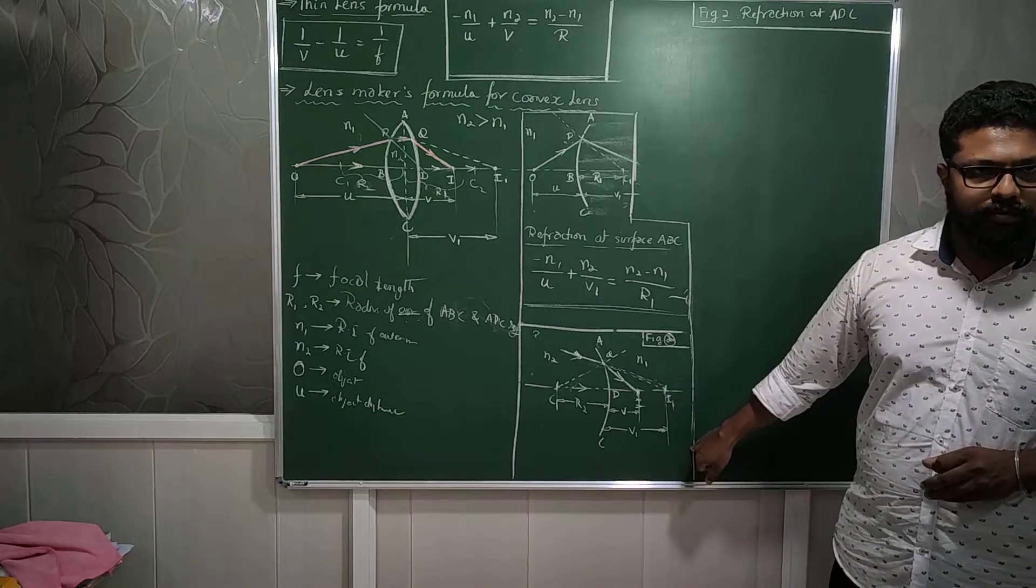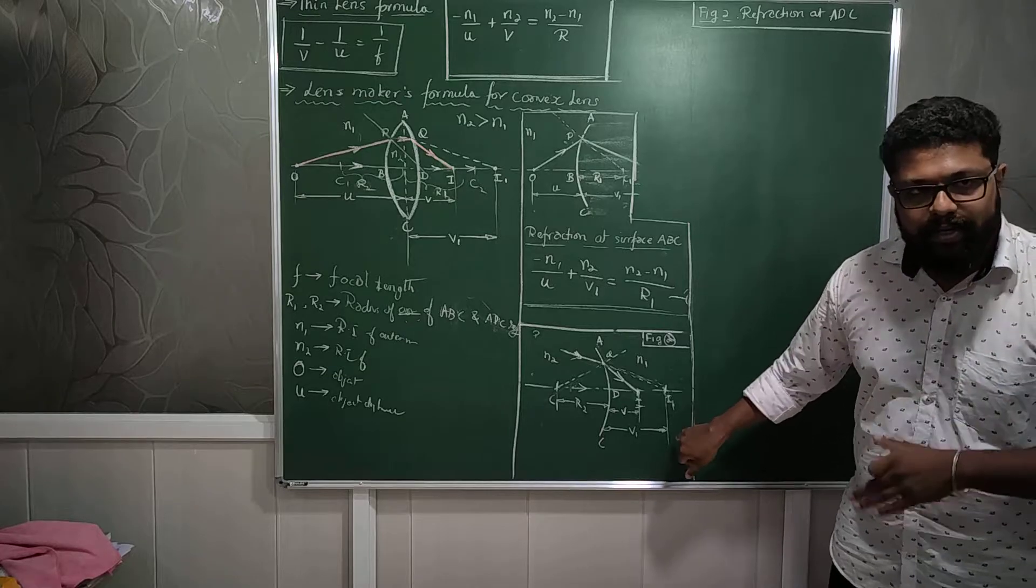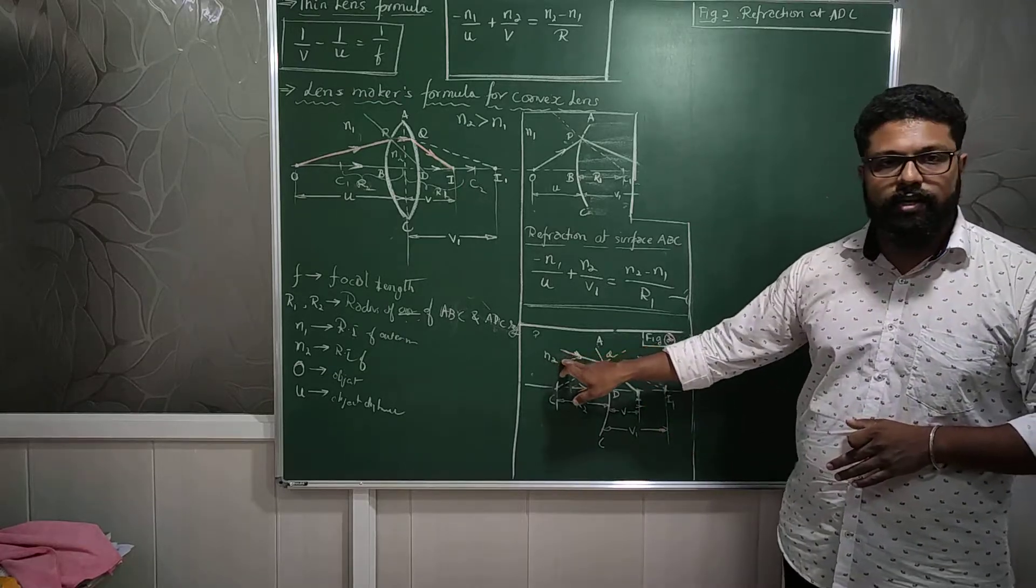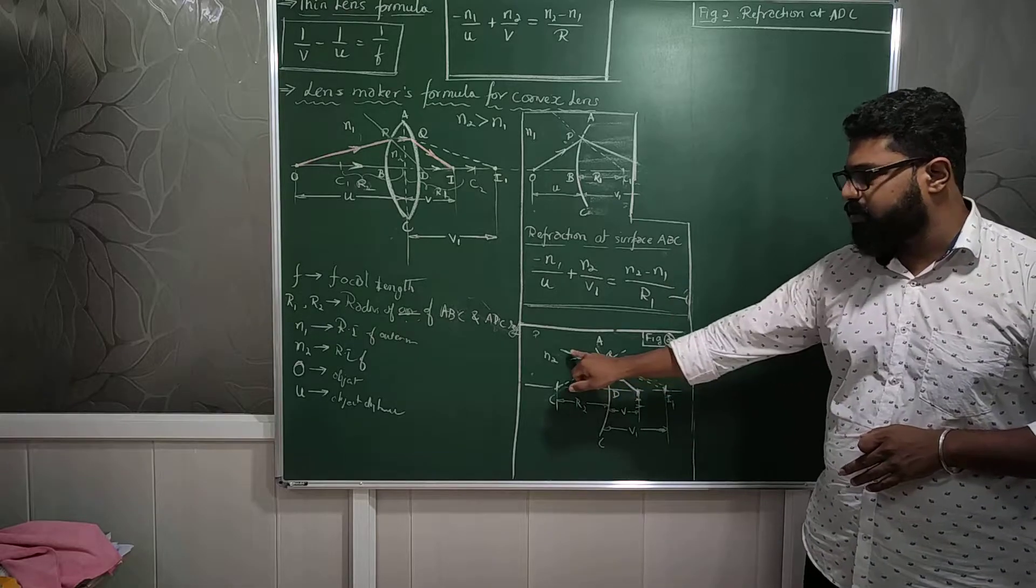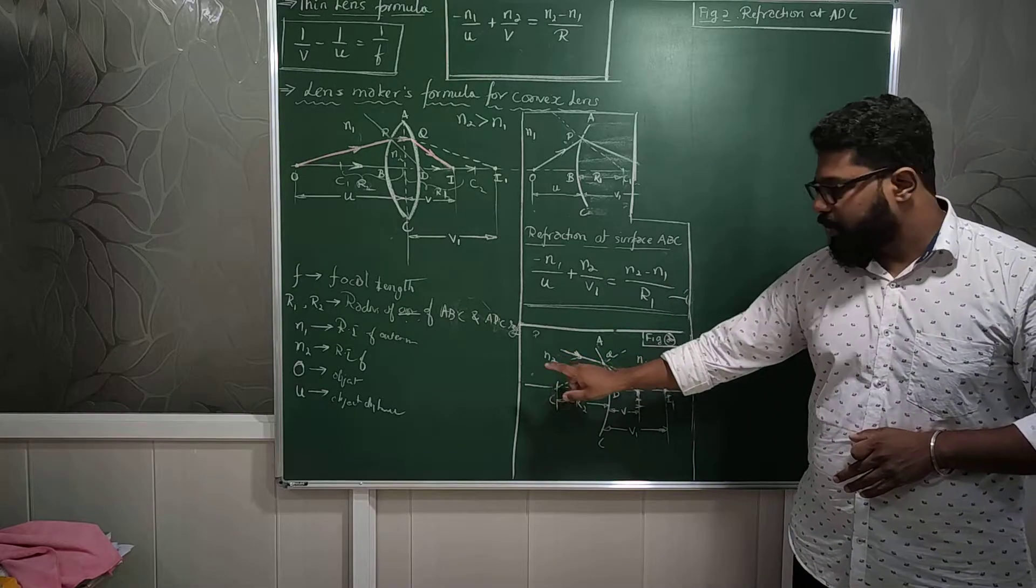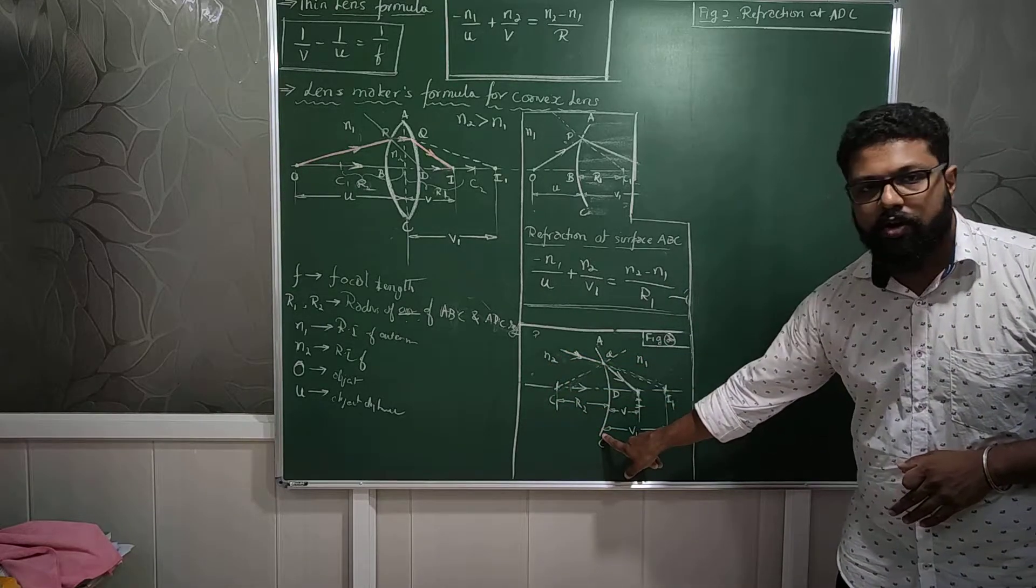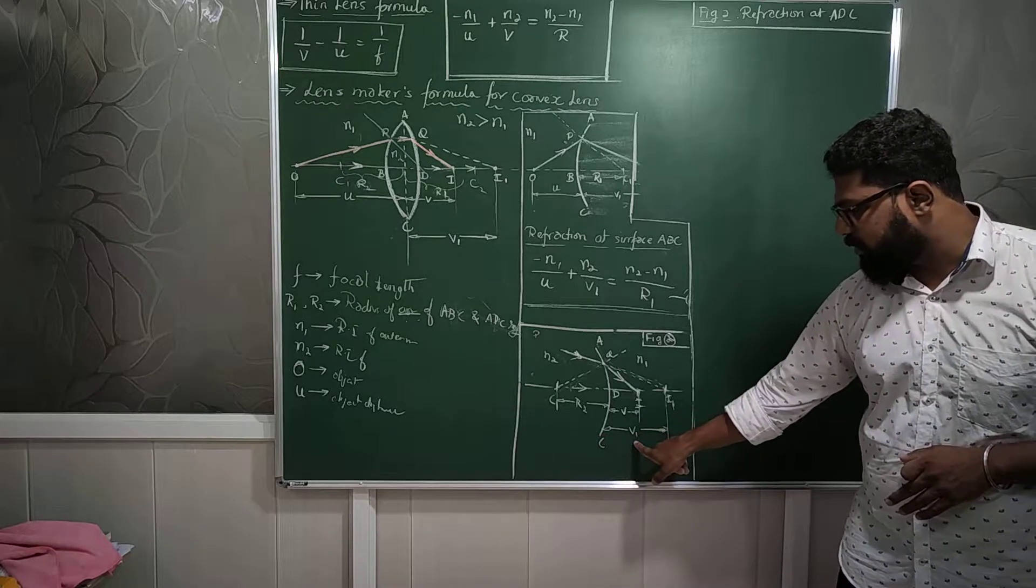And this is where my virtual image will be present, I1. I will call that virtual image position as I1. And that is the source which is causing this particular light ray to come from. This is the source of this light ray.